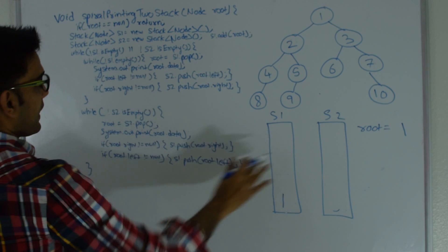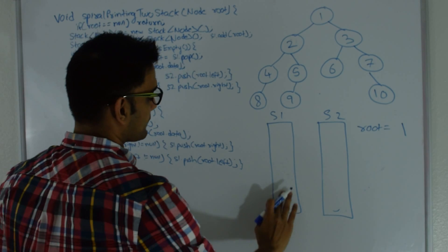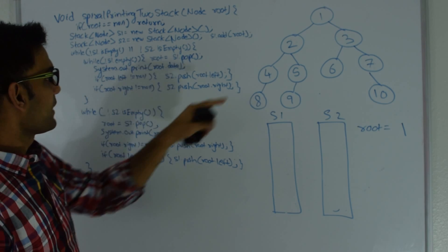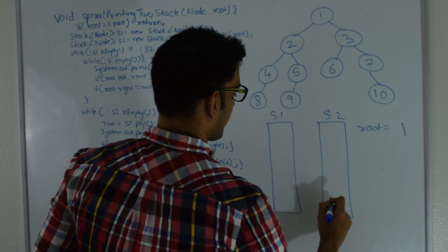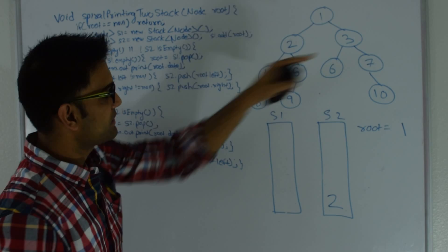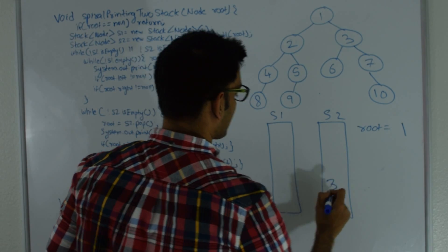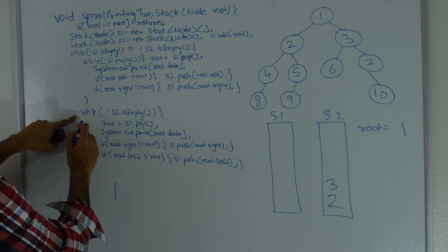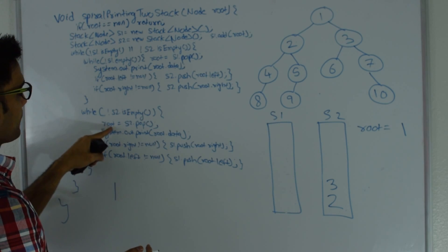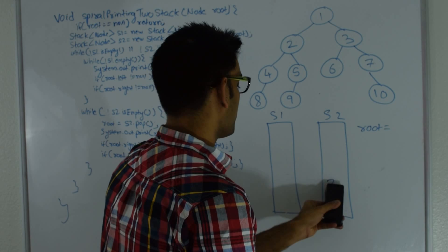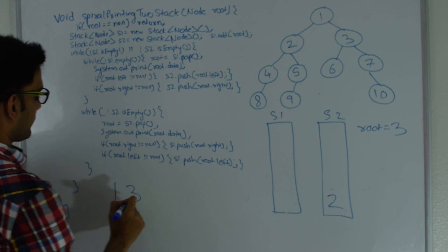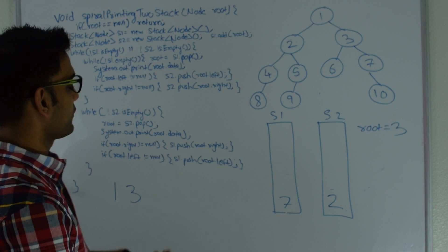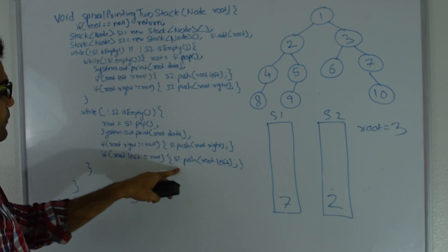We enter the outer while loop since stack 1 is not empty, then the inner while loop. We pop from stack 1 — root becomes 1. First we print root's data. If root has a left child we push it into stack 2; if root has a right child we push it into stack 2 as well. Stack 1 is now empty so we move to the second inner while loop — stack 2 is not empty, so we pop from stack 2 — root becomes 3. We print 3. 3 has a right child pushed to stack 1, and a left child pushed to stack 1.